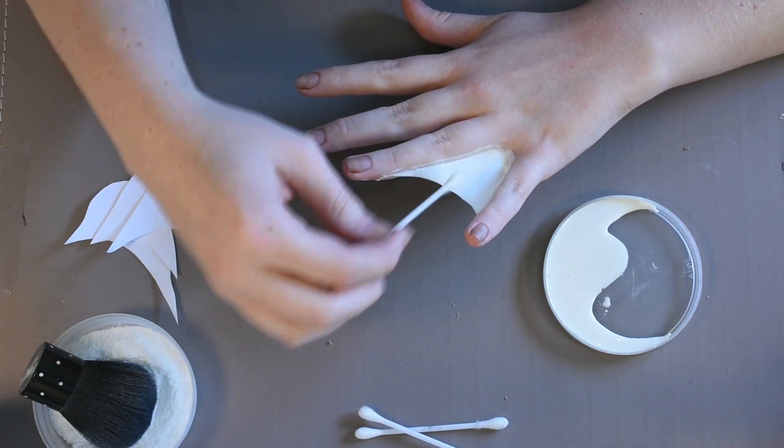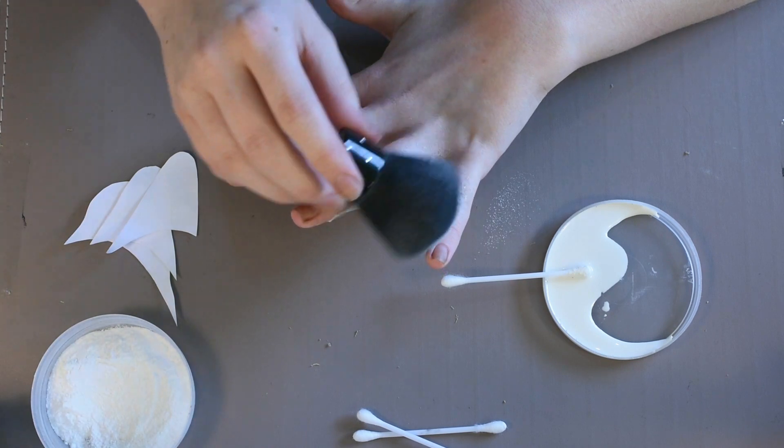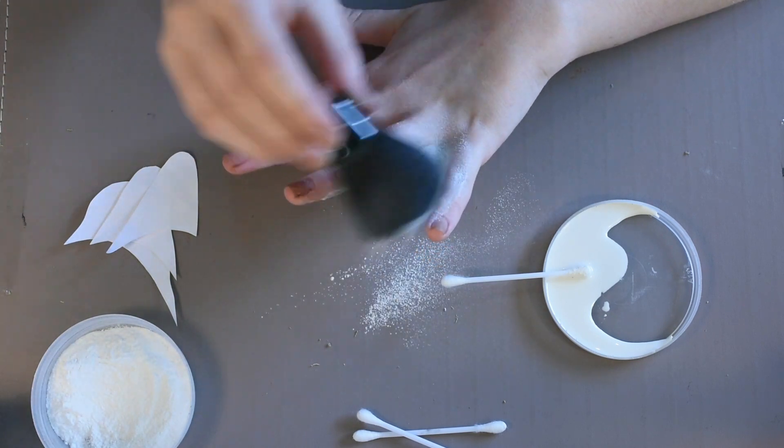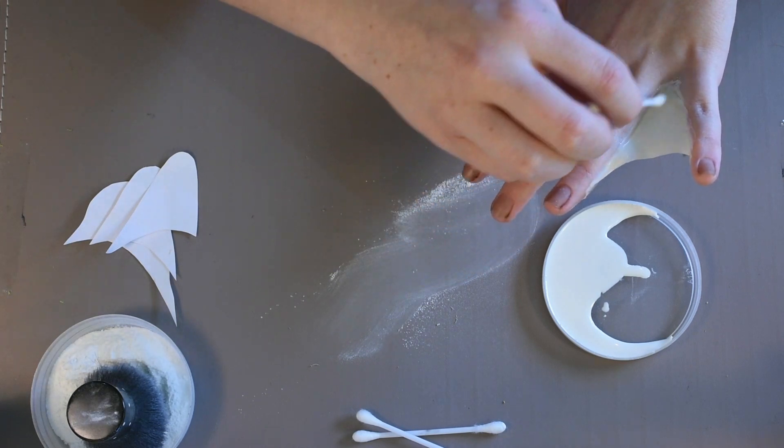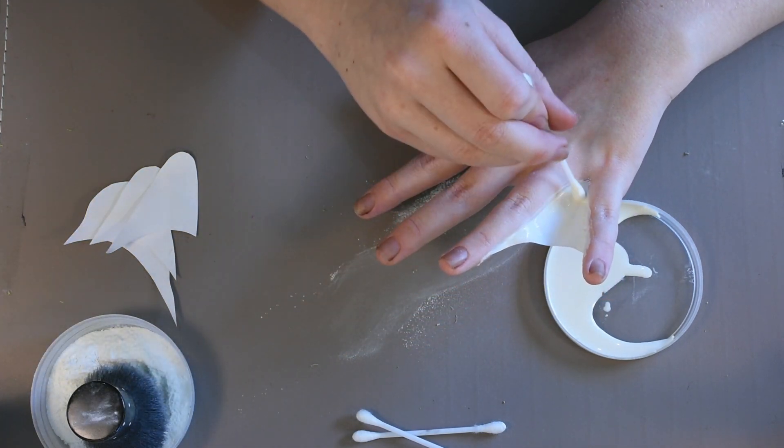Coat the whole web in a layer of latex. Be careful and don't apply too much pressure—it will still be pretty fragile at this point. Once this is mostly dried, add powder. I just use baby powder, but you can use flour or translucent powder too. This will stop the latex from sticking together. Add more layers of latex on the top of the web.